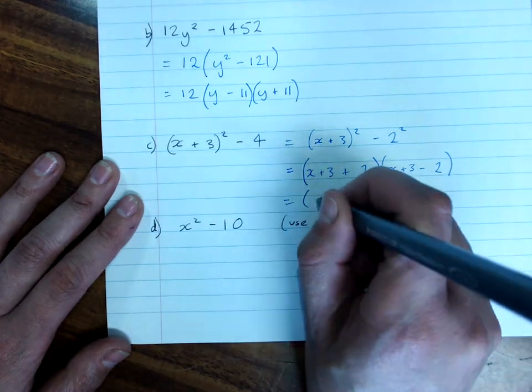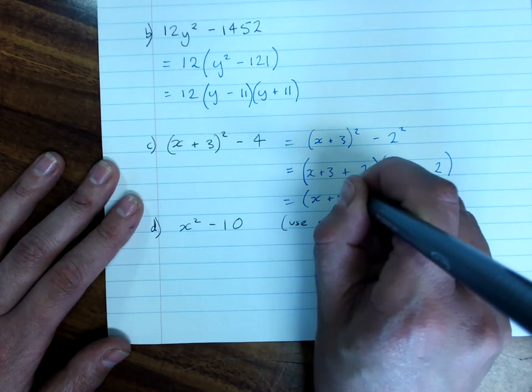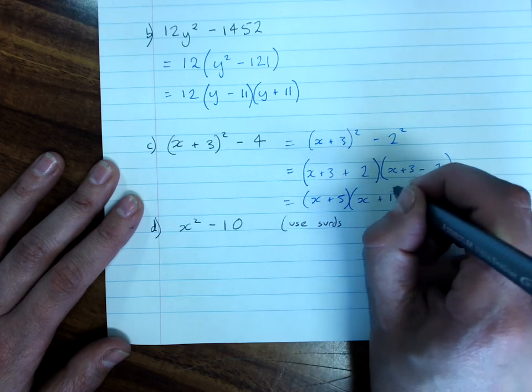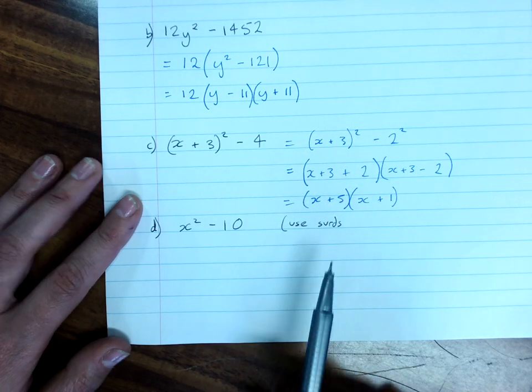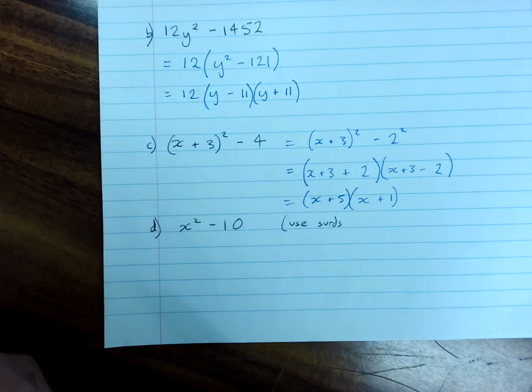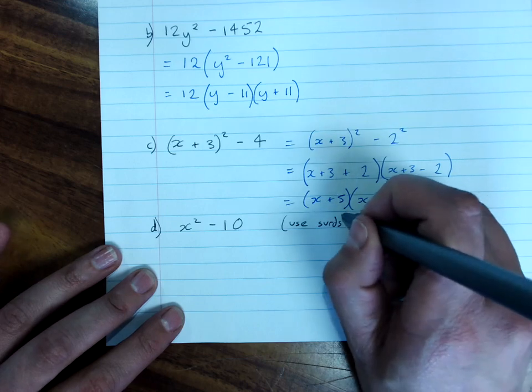And you can simplify this. x plus 3 plus 2, that's x plus 5. And x plus 1. So, we have to be on the alert for difference of perfect squares. Close my bracket there.